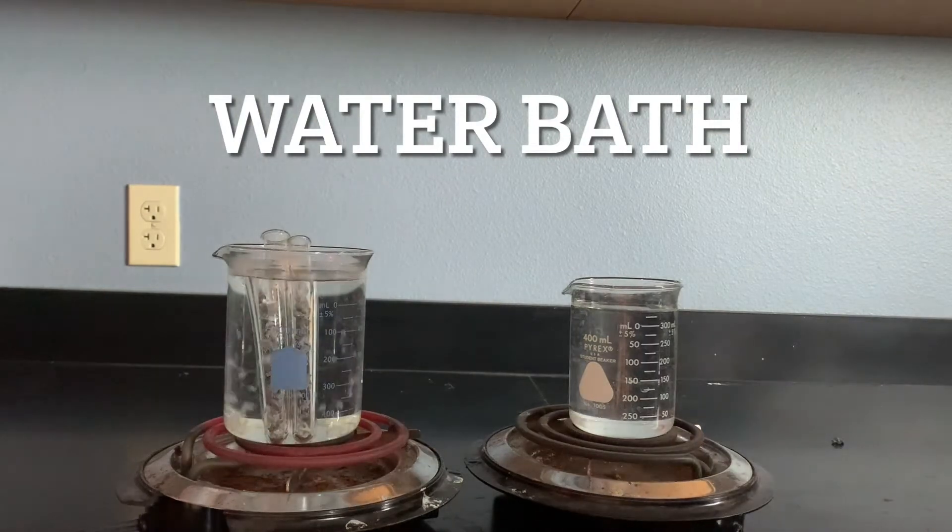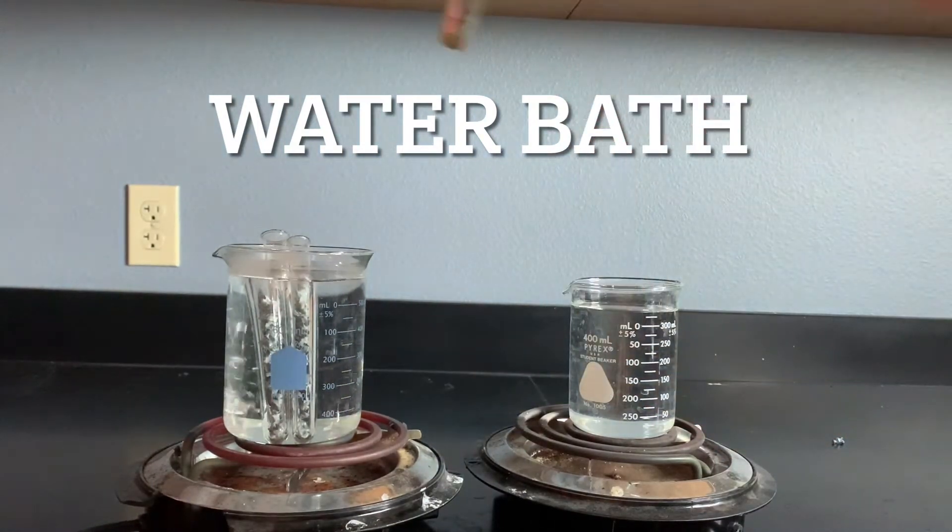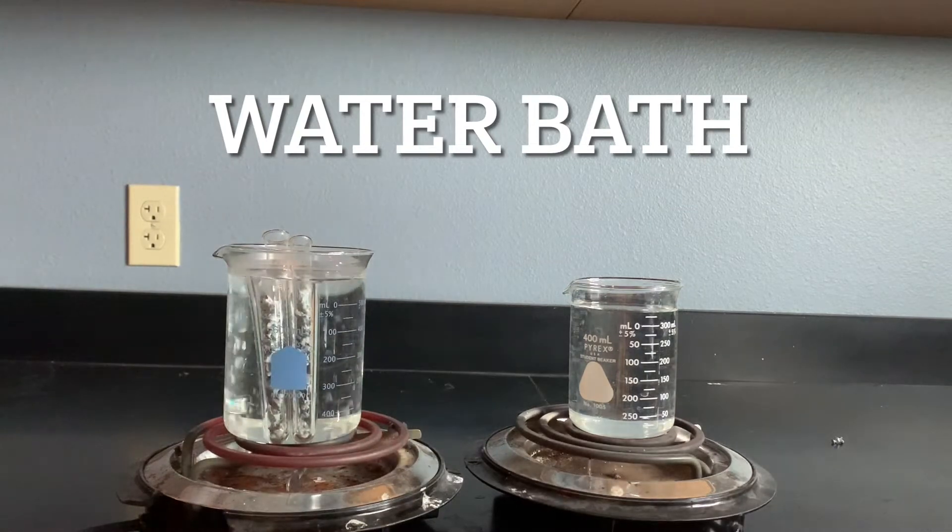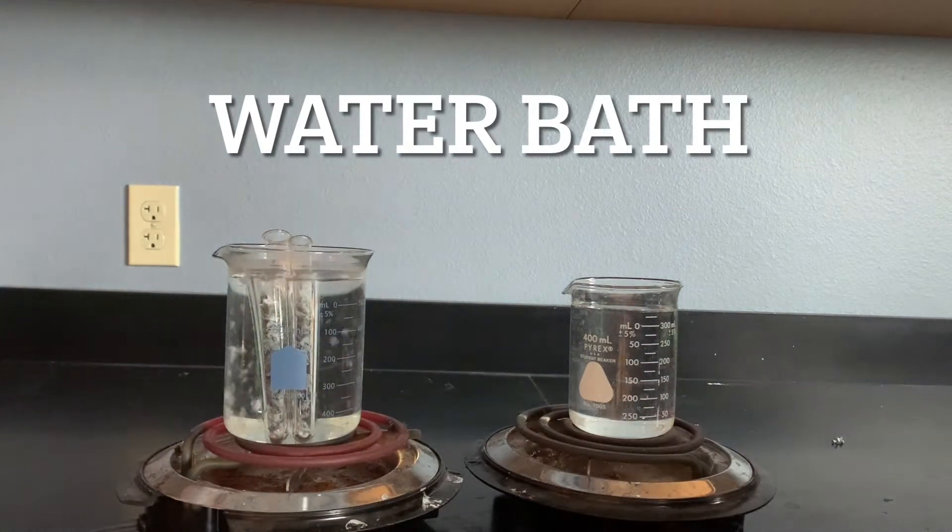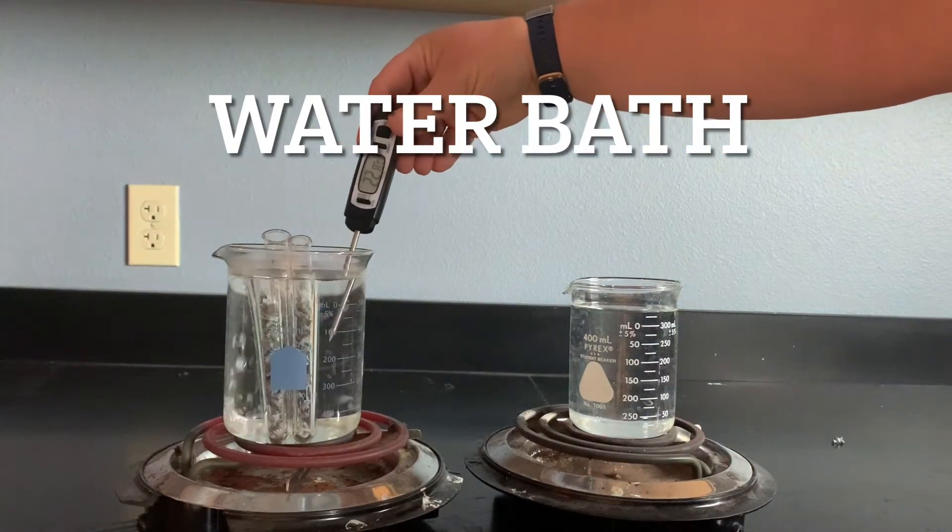The metals in the test tubes don't have anything else in them, it's strictly just the metal. The reason we use the water is because we know that the water temperature when it's boiling should be 100 degrees Celsius.